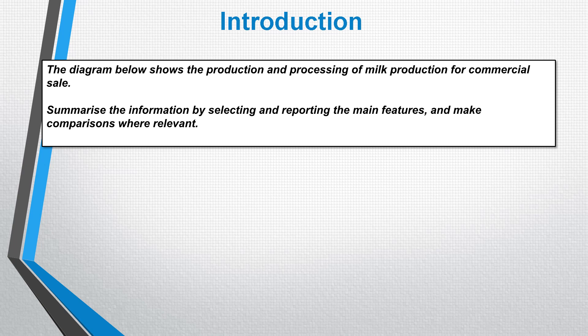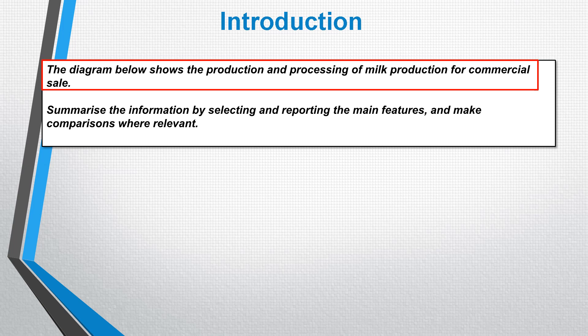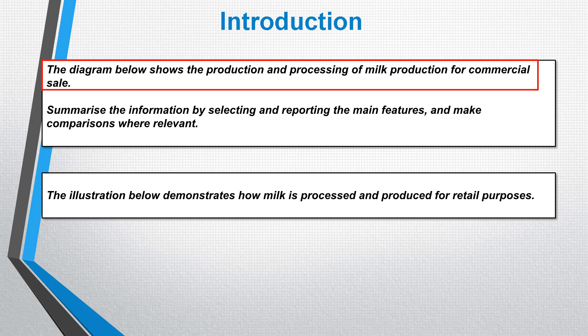Before we get to the overview and details paragraphs, we write the introduction the same way as always. The opening statement reads: 'The diagram below shows the production and processing of milk production for commercial sale.' We use direct synonyms: 'The illustration below demonstrates how milk is processed and produced for retail purposes.' So 'diagram' becomes 'illustration,' 'shows' becomes 'demonstrates,' 'production and processing of milk' is reordered, and 'for commercial sale' becomes 'for retail purposes.' Very simply, we've used direct synonyms.